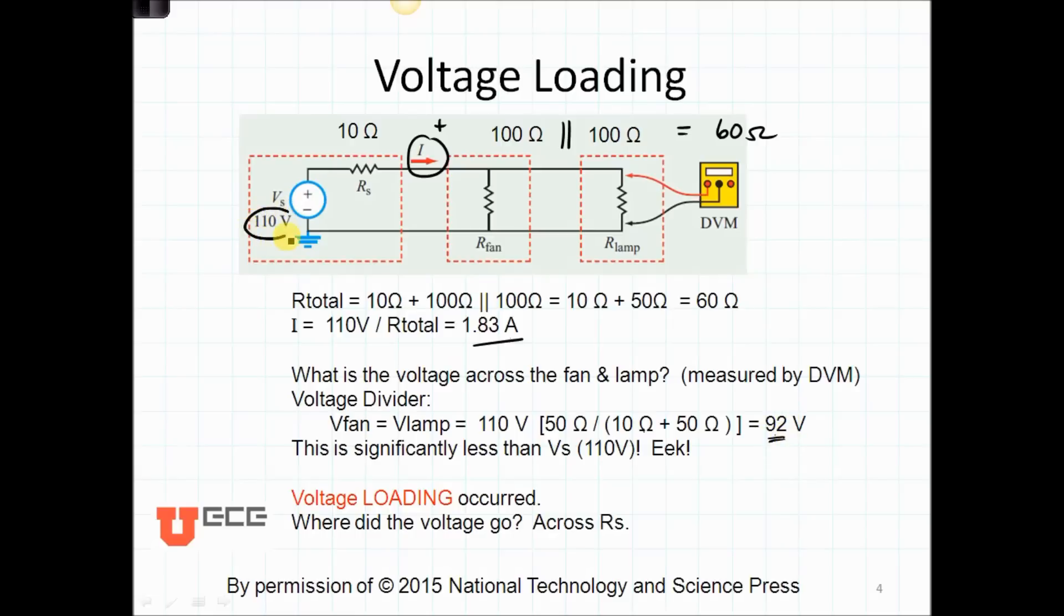Where did the voltage go? It went across our Rs right here. What could we have done to reduce this voltage loading? We could have reduced our source resistance to a much smaller value so that we got a higher value here. Take a minute, stop the video, and see if you can calculate what the voltage is across the fan and the lamp. Is it closer to 110 volts?